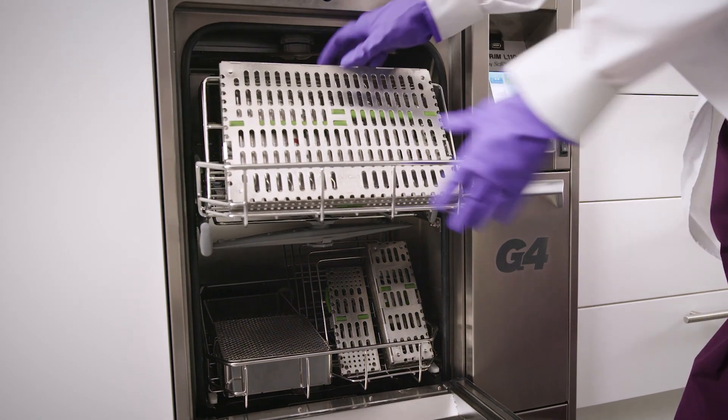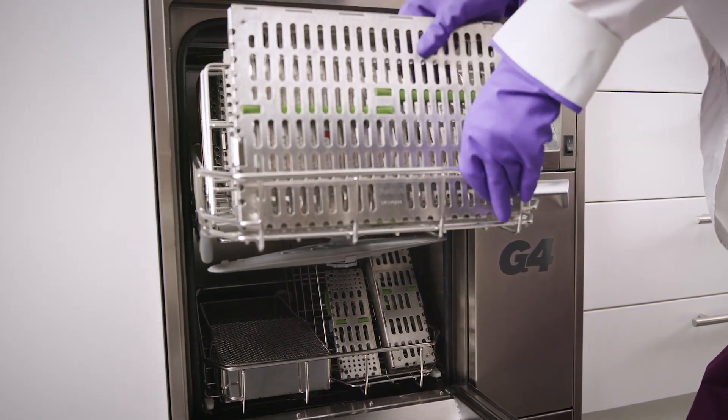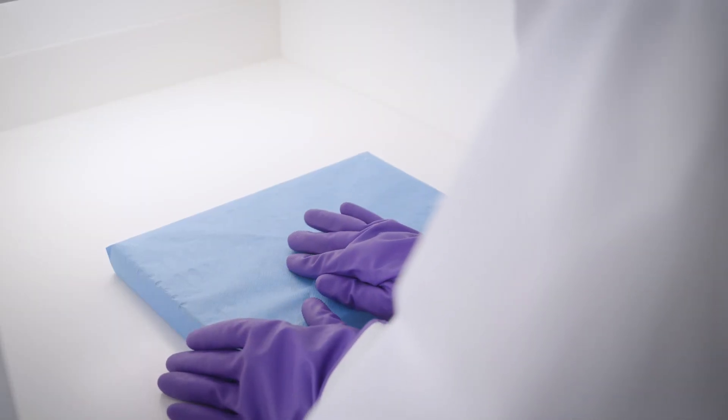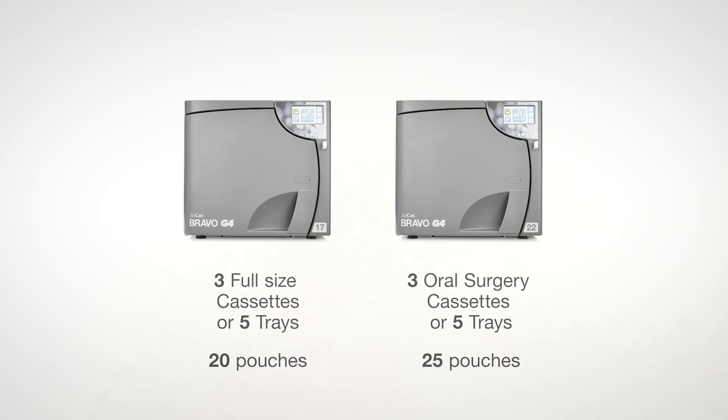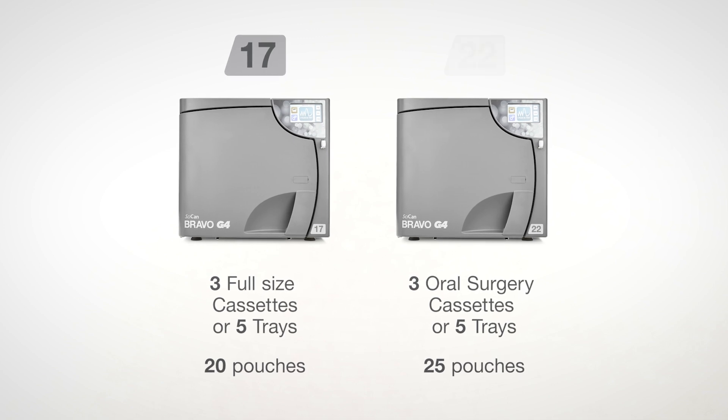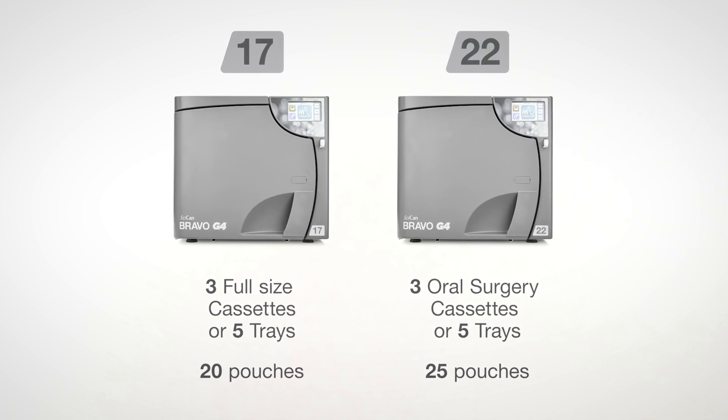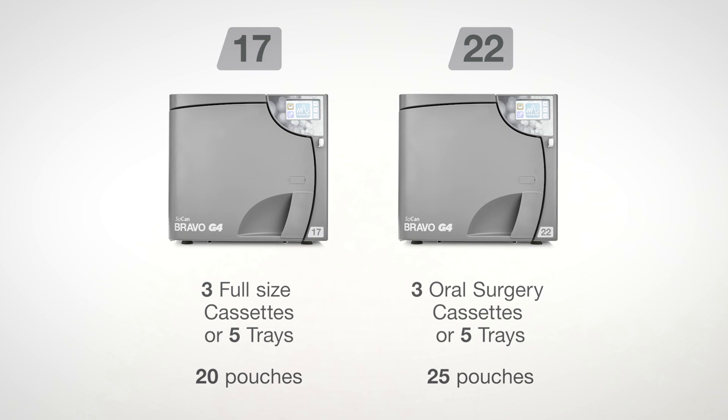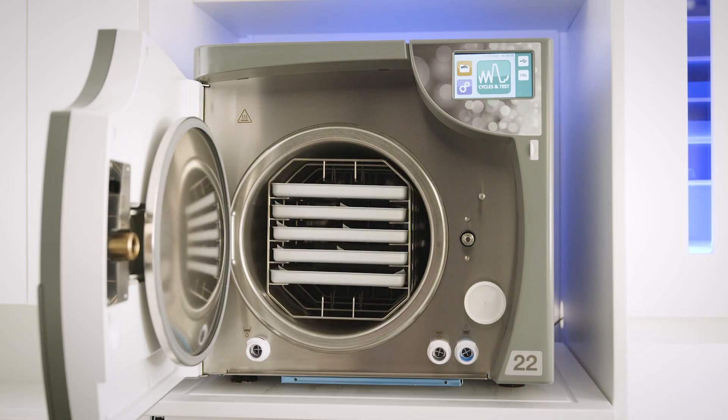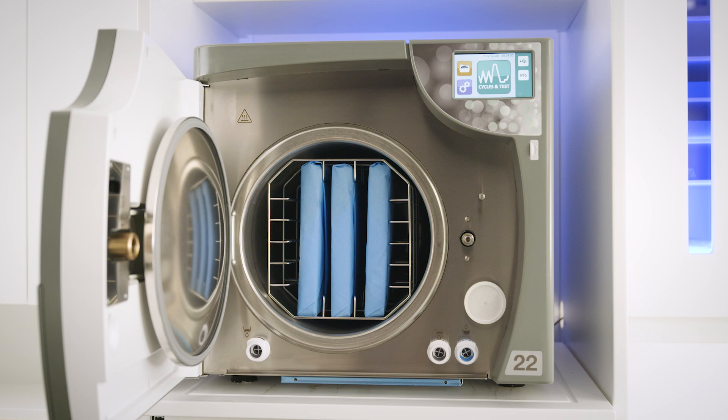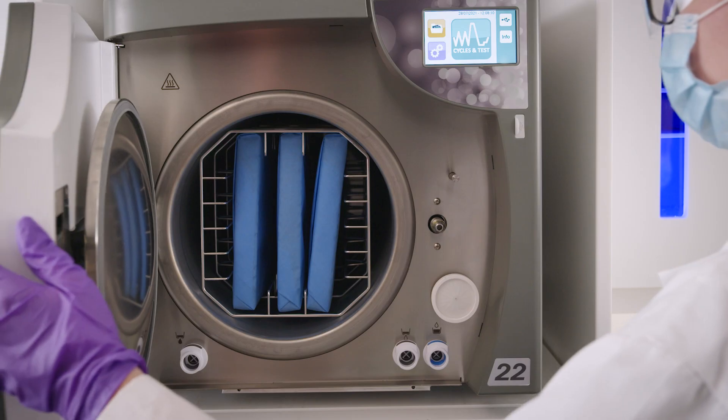The instruments must be cleaned, rinsed, dried, and wrapped before being placed in the Bravo G4. The Chamber Rack included with the 17L and 22L Bravo G4 will hold 3 cassettes or 5 trays. Pouches should be carefully arranged on the tray, plastic side down, and in such a way that they do not overlap. Place the cassettes or pouches in the chamber and close the door.